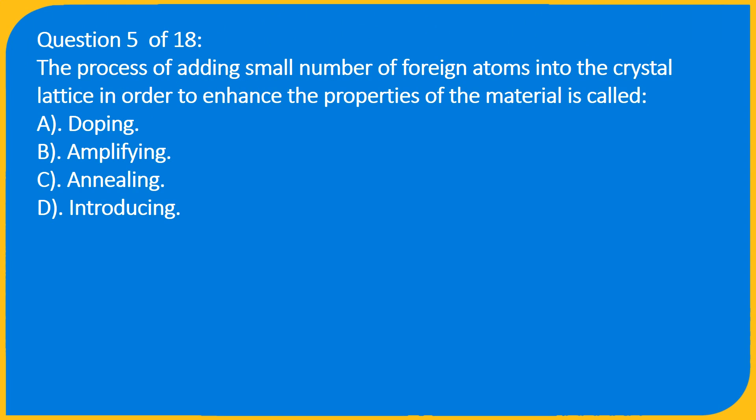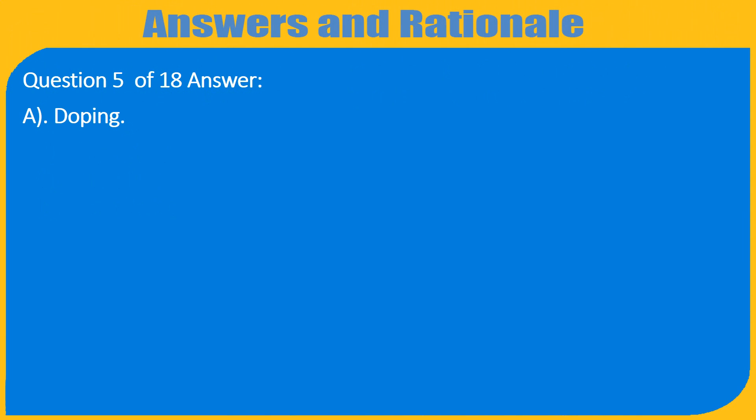Question 5 of 18: The process of adding small number of foreign atoms into the crystal lattice in order to enhance the properties of the material is called: A. Doping, B. Amplifying, C. Annealing, D. Introducing. Question 5 of 18 Answer: A. Doping.